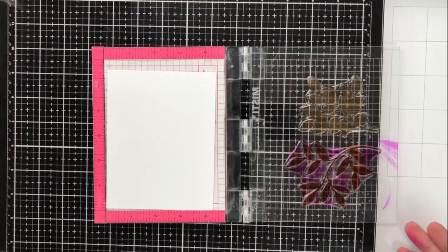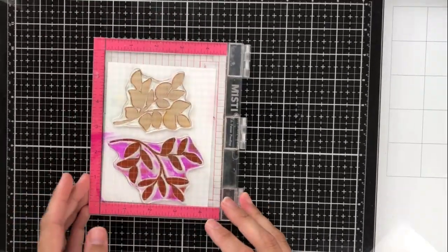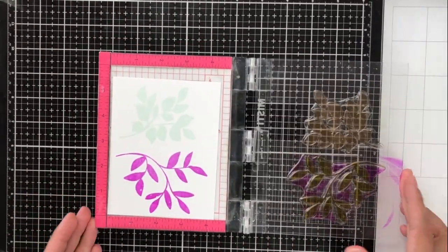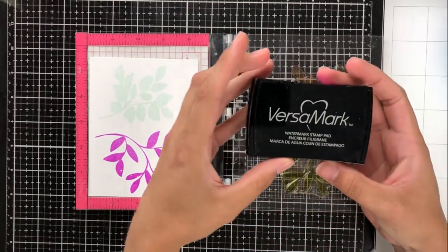I'm going to do one botanical branch in mint to be and the other in flirty fuchsia. And as long as I keep the ink pad in the parameters of those branches, each will come out perfect. And it's hard to see that mint to be here because of the lighting, but I promise you it's there.